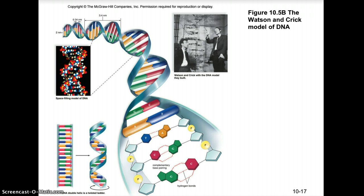What Watson and Crick basically said was that DNA is a double helix that holds information, specifically that the sequence of nucleotides carries the information of genes. Their model also illustrated that the molecule follows the rules of complementary base pairing, and showed how DNA could be replicated. Our focus in this lecture will be DNA replication and how genes can be transcribed into proteins — a process known as protein synthesis.